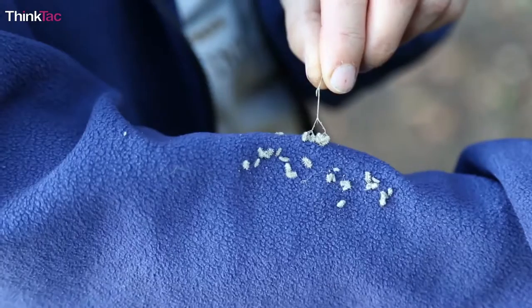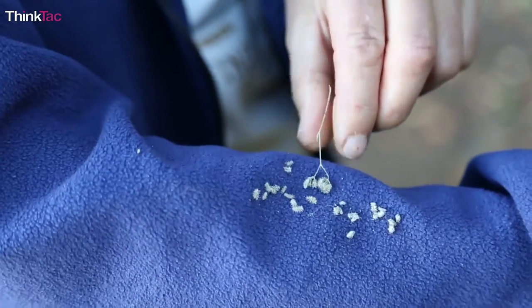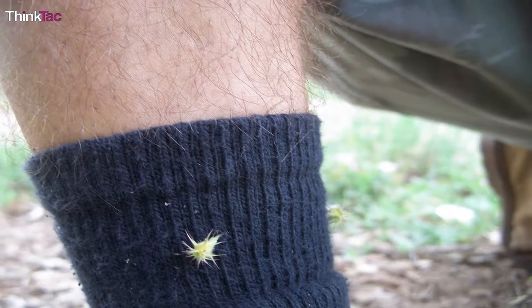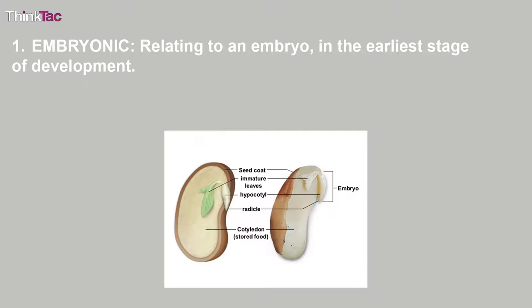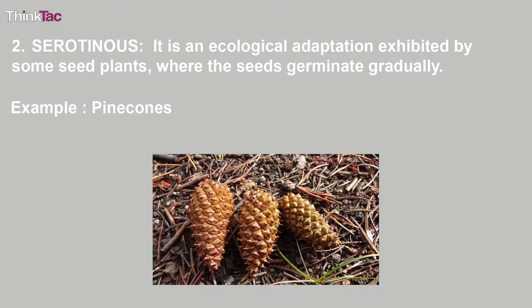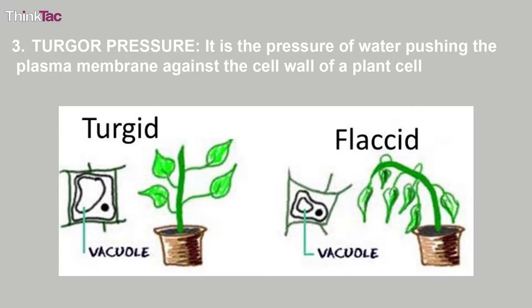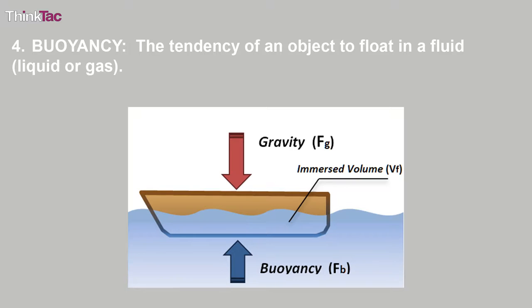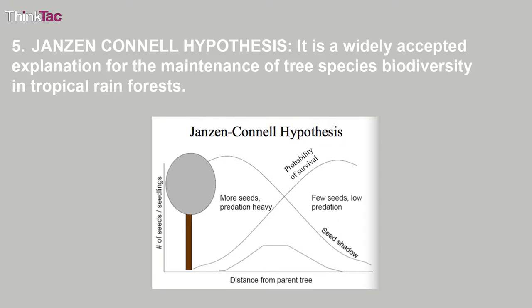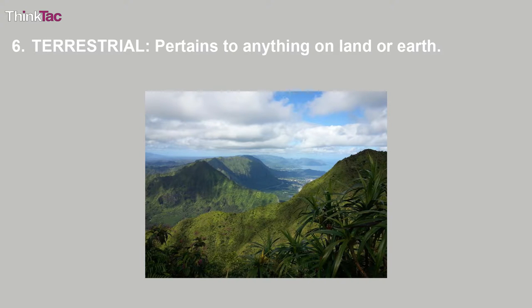The last type of dispersal is by humans — anthropochory. Seed dispersal by humans is less common but can occur via clothes, shoes, or even cars, which can carry seeds to longer distances. Some scientific terms: embryonic refers to the earliest stage of development; serotinous is an ecological adaptation where seeds germinate gradually; turgor pressure is the pressure of water pushing the plasma membrane against the plant cell wall; buoyancy is the tendency of an object to float in a fluid. The Janzen-Connell hypothesis is a widely accepted explanation for the maintenance of tree species biodiversity in tropical rainforests.